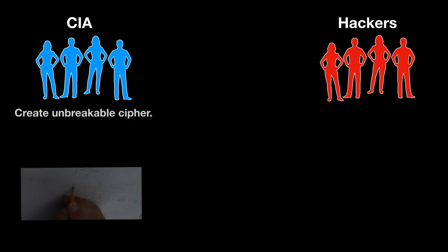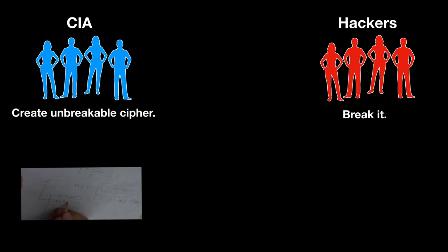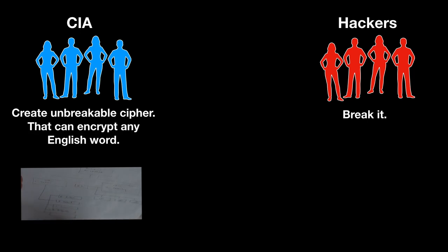CIA's goal is to create an unbreakable cipher and hackers must break it. Now it is quite difficult to break a cipher just by listening to encrypted communication, therefore we need to give hackers some advantage. The CIA will create a cipher that can encrypt any English word and send it verbally with no visual signals.